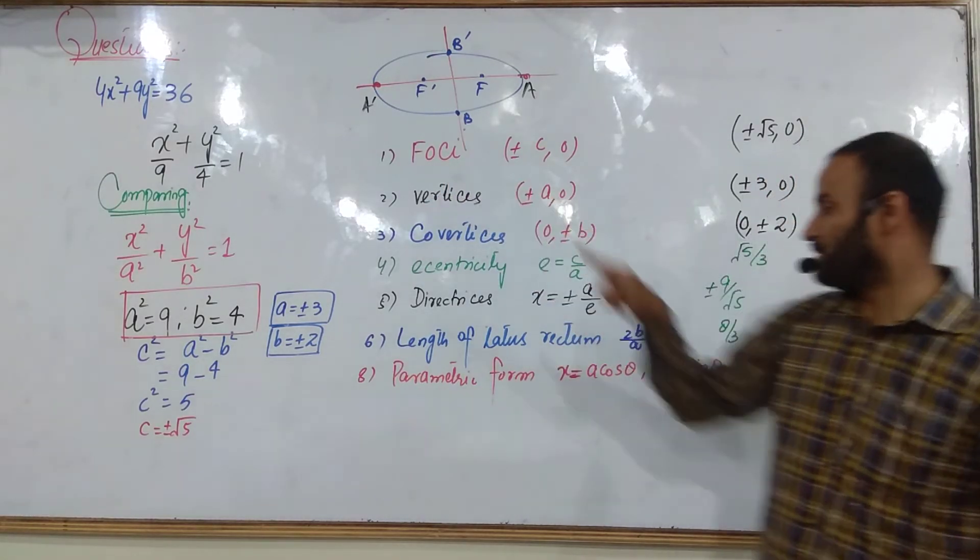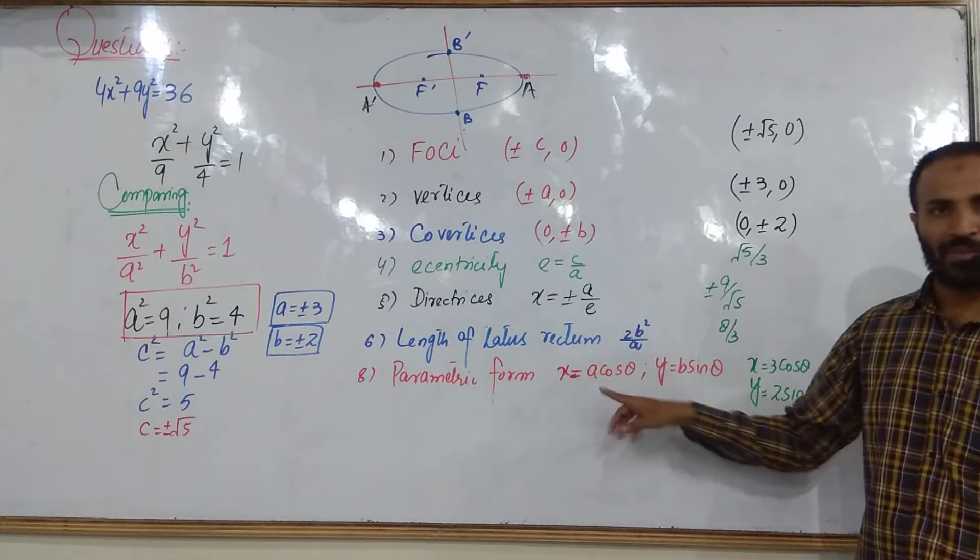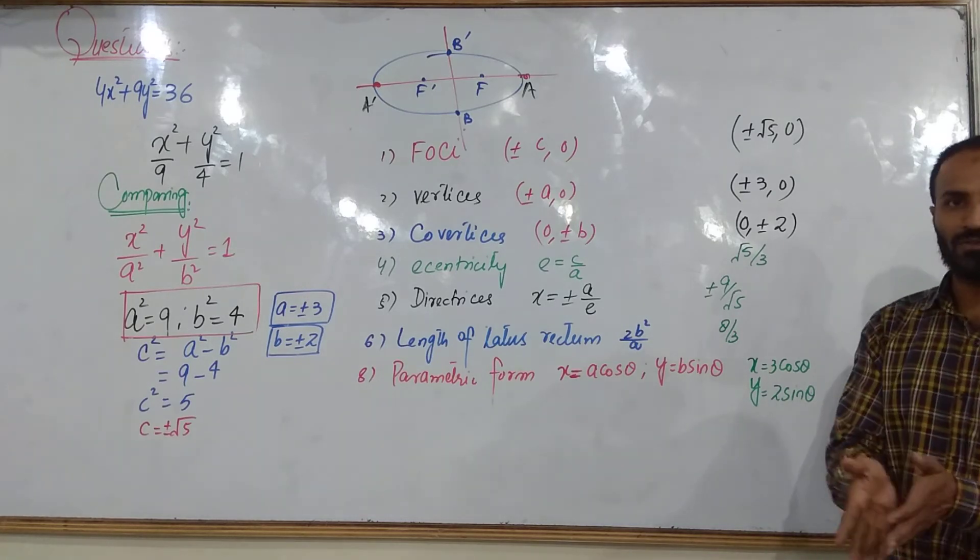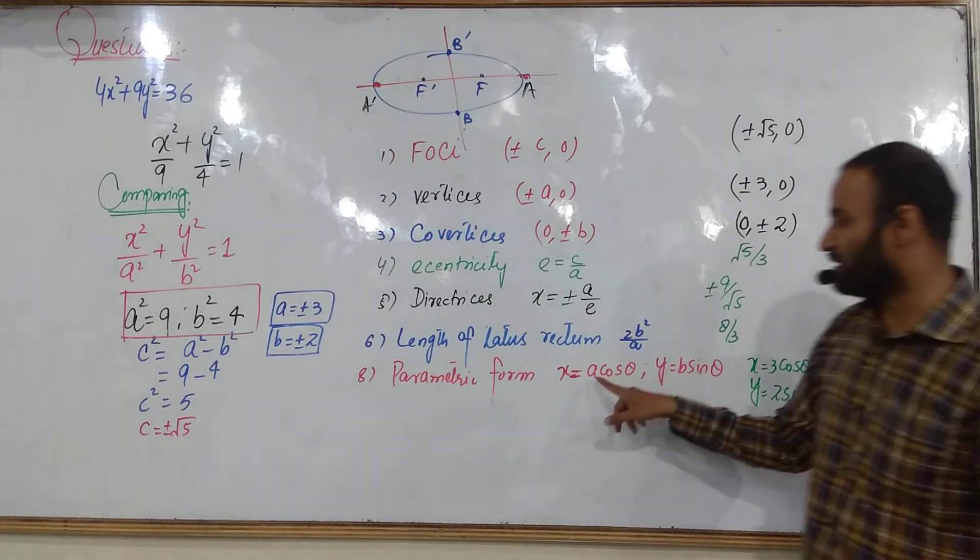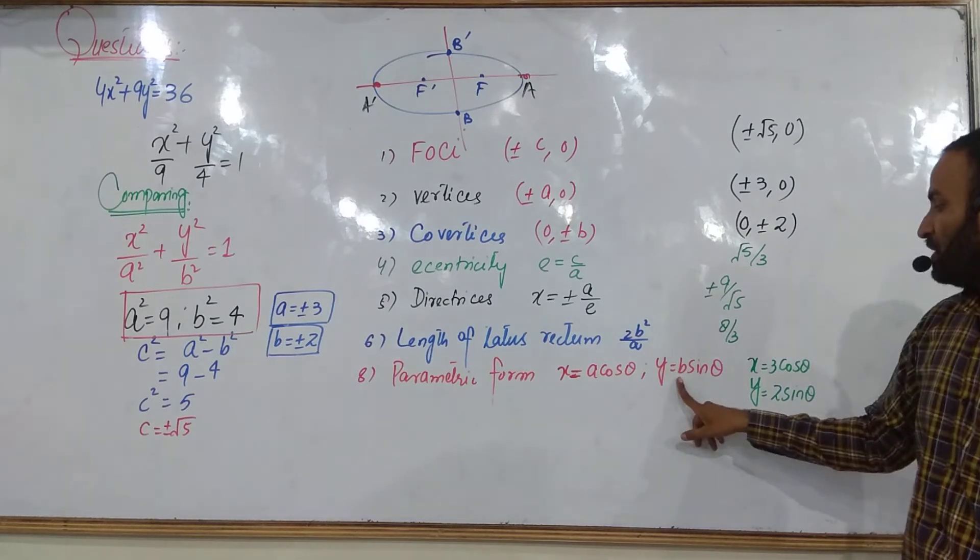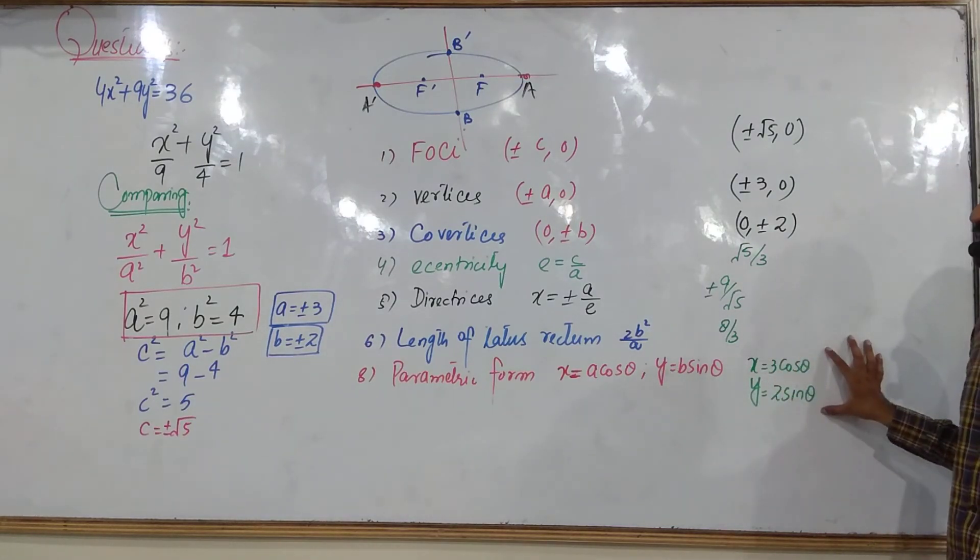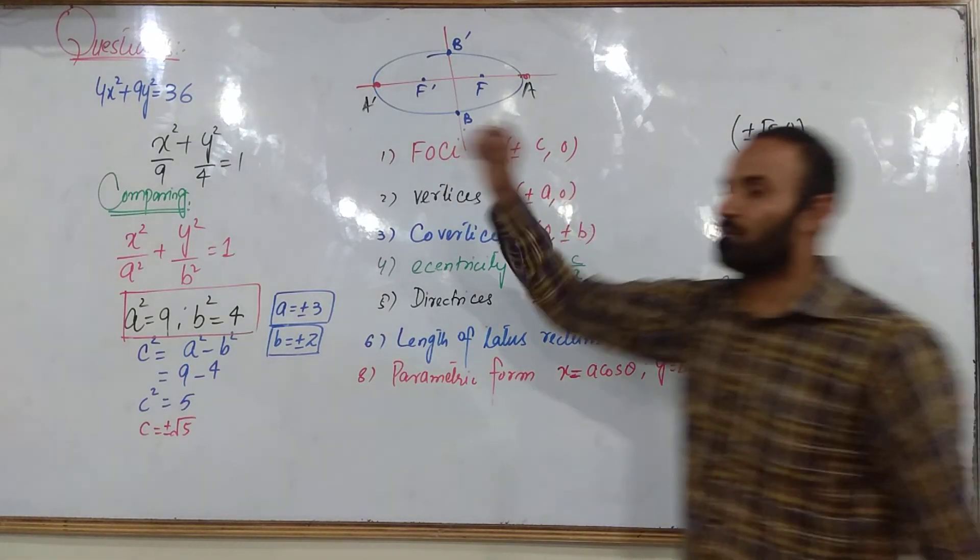This is the parametric line. What is the parametric line? You know that. What is the parametric line? x is equal to A cos θ, y is equal to b sin θ. Just look here, value of A and value of b. Then you will get the parametric line for this ellipse.